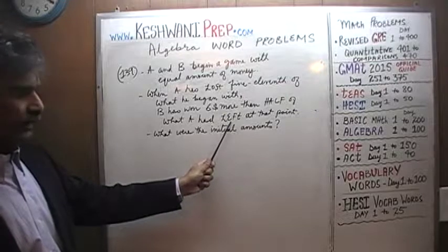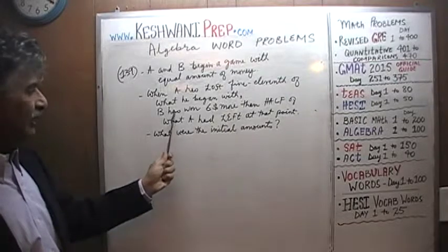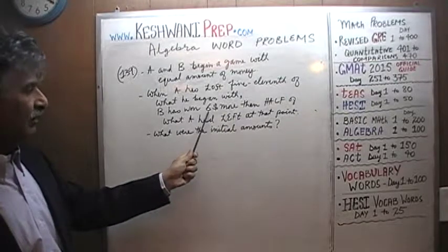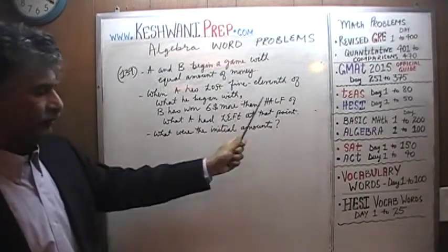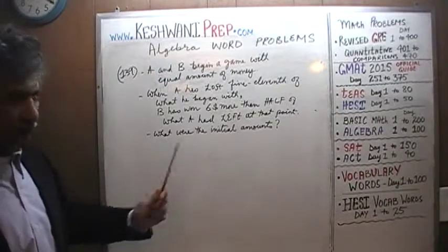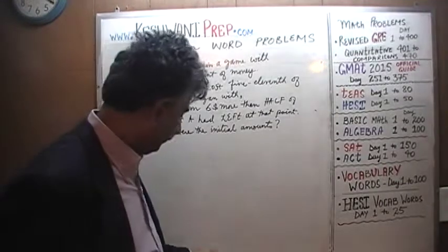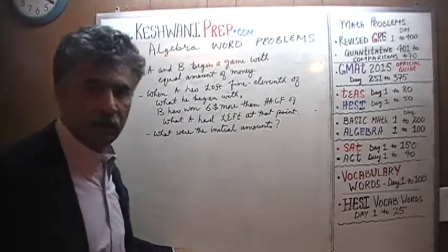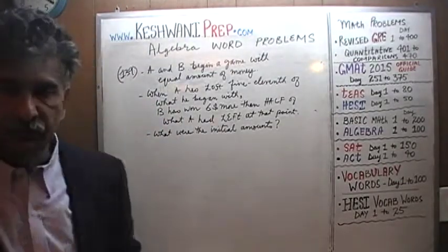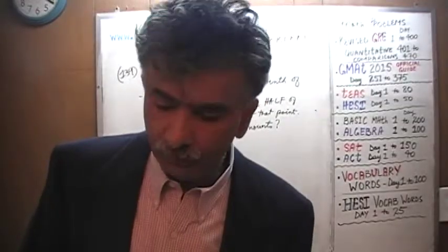...we are told that B has won six dollars more than half of what A has left at that point. Whatever money A has left at that point, B has won six dollars more than half of that amount. The question simply is: what did they start out with — what were the initial amounts? I will give you five seconds to pause and solve it yourself.